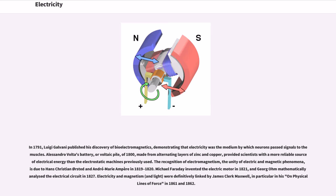In 1791, Luigi Galvani published his discovery of bioelectromagnetics, demonstrating that electricity was the medium by which neurons passed signals to the muscles. Alessandro Volta's battery, or Voltaic Pile, of 1800, made from alternating layers of zinc and copper, provided scientists with a more reliable source of electrical energy than the electrostatic machines previously used. The recognition of electromagnetism, the unity of electric and magnetic phenomena, is due to Hans Christian Ørsted and André-Marie Ampère in 1819-1820. Michael Faraday invented the electric motor in 1821, and Georg Ohm mathematically analyzed the electrical circuit in 1827. Electricity and magnetism and light were definitively linked by James Clerk Maxwell, in particular in his On Physical Lines of Force in 1861 and 1862.